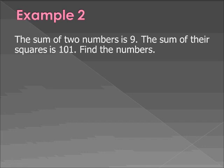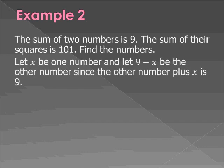Example 2. The sum of two numbers is 9. The sum of their squares is 101. Find the numbers. All right. So this is simple enough. Let's call x one number. And let's let 9 minus x be the other number since the other number plus x is 9. So back in Chapter 3, we did a substitution. I'm skipping the substitution step. Just know that x plus 9 minus x equals 9. And if you add them together, you see the x's cancel out.